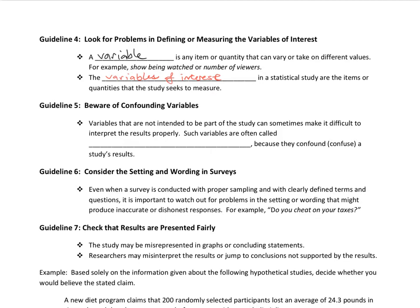Guideline number five: beware of confounding variables. Variables that are not intended to be part of a study can sometimes make it difficult to interpret the results properly. Such variables are called confounding variables because they confound — that is, confuse — the study's results.